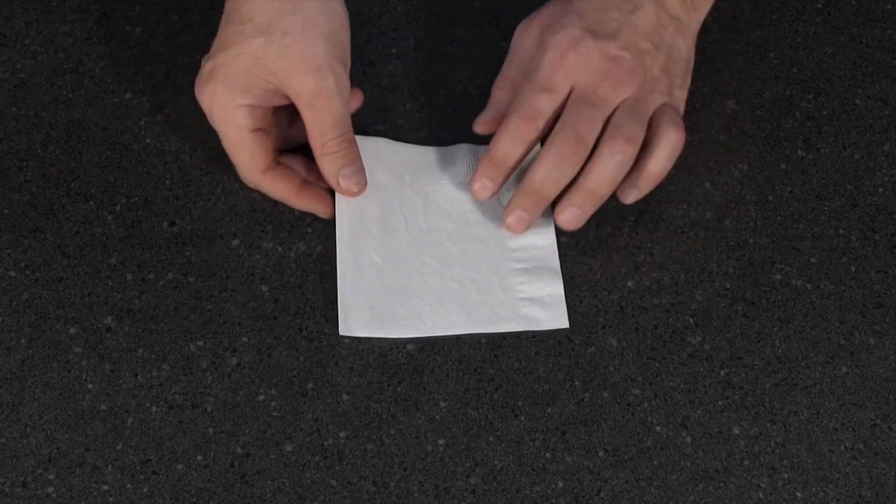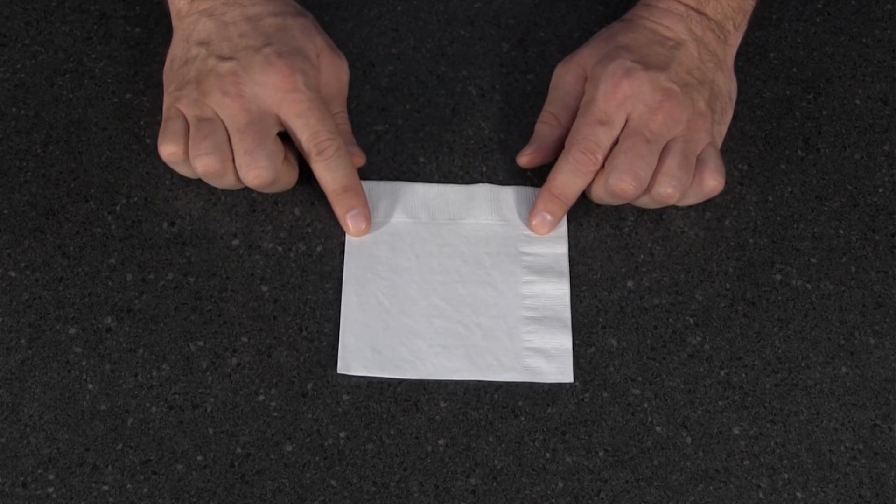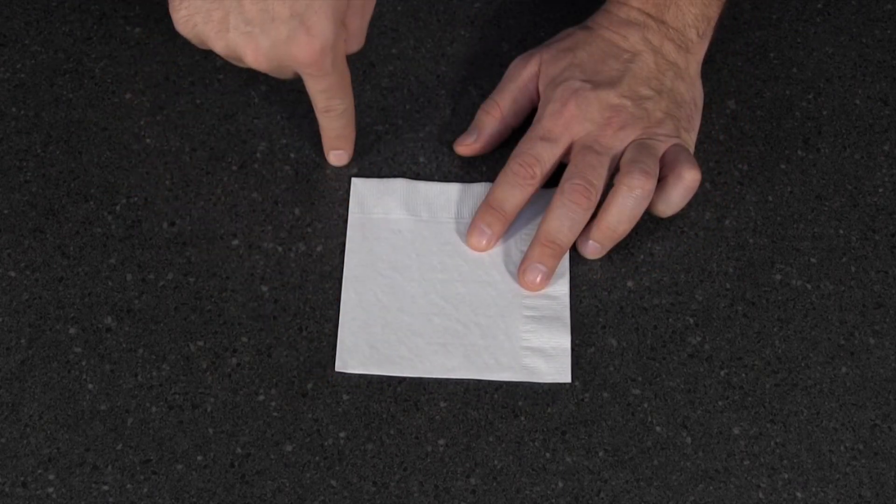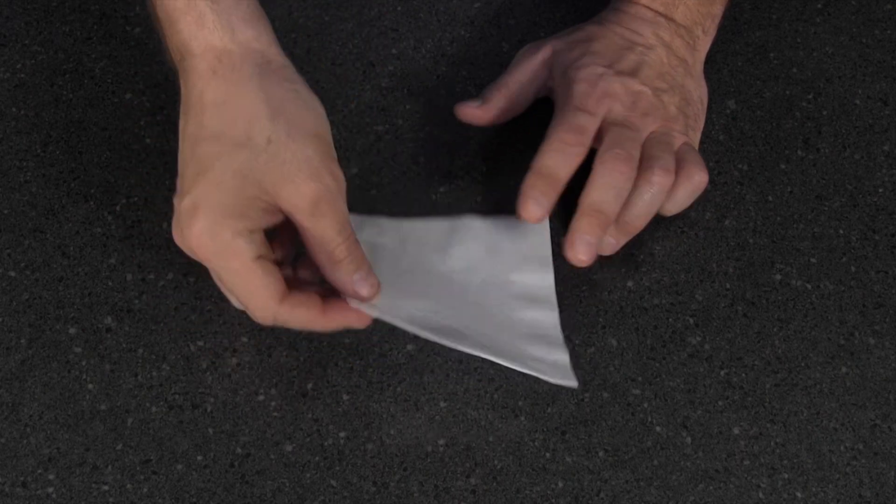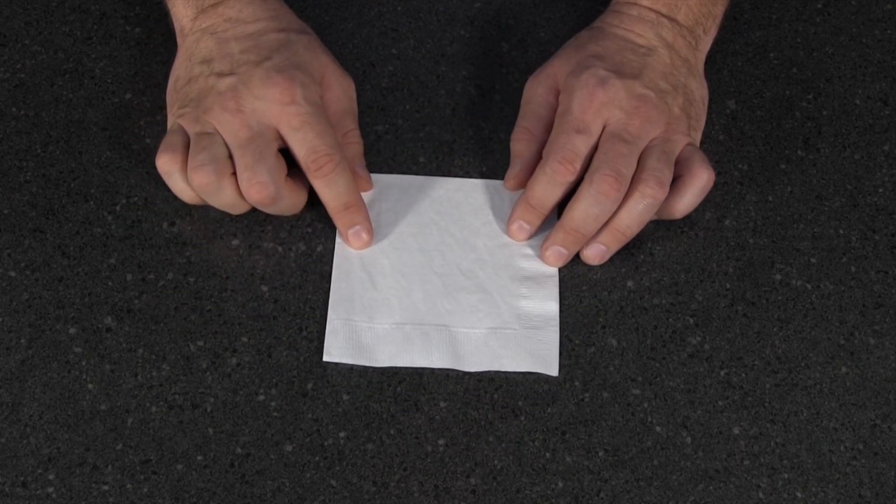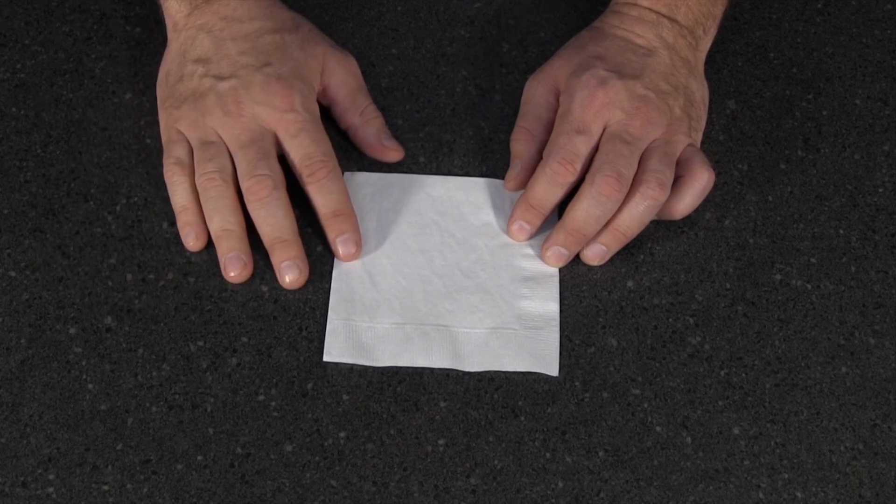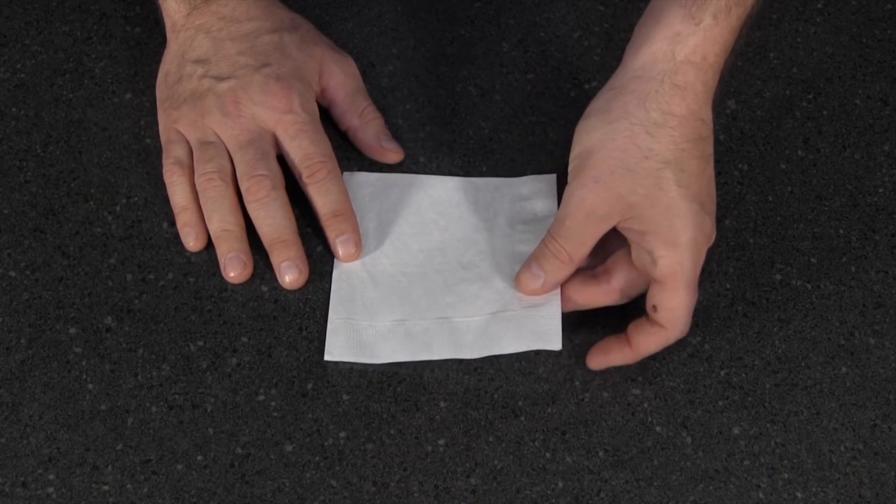First you need a napkin, a cocktail napkin. This is 5 inches by 5 inches, and these are most commonly found in bars, but you can get them at liquor stores or convenience stores and stuff like that.